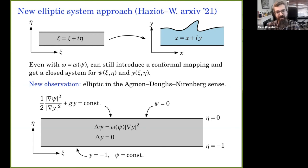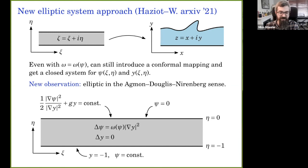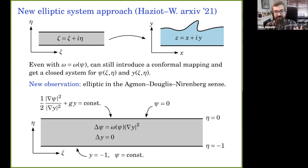Using a conformal mapping with the strip as the conformal domain, and allowing even general vorticity distribution ω(ψ), just introducing the conformal mapping and using the chain rule gives you the reformulated equation. Where we had one-half |∇ψ|² + gy, we now have a chain rule term in the denominator; where we had Δψ = ω(ψ), we again get a chain rule term after changing variables. The big bonus is the domain is now fixed to be the strip.